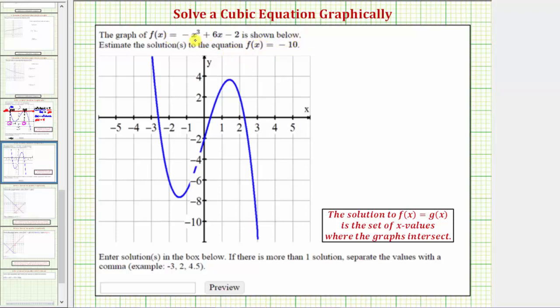So we know f(x) equals negative x cubed plus 6x minus 2, which means we want to graphically solve the equation negative x cubed plus 6x minus 2 equals negative 10.